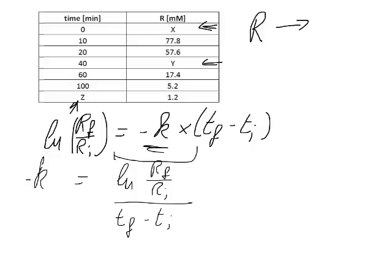To get the numerical value, the easiest way is to make a table. So I need r_final, r_initial, t_final, and t_initial. We need to bear in mind that these need to be data pairs. So we have r_initial and its corresponding t_initial, and r_final and its corresponding t_final.